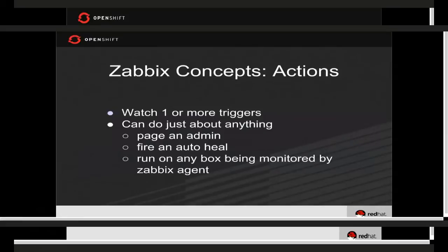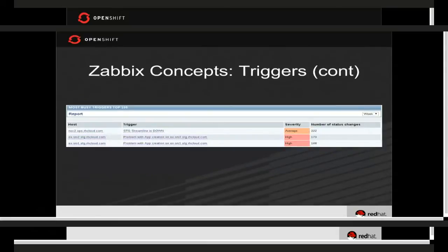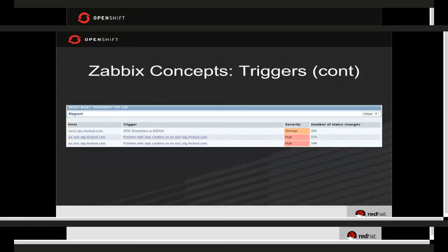Actions are the things that actually do something. Actions can watch one or more triggers, and whenever a trigger fires, they can say: triggers with this severity, in this environment, on this host group — when that fires, go run this script or do this. They can page an admin, they can fire an auto-heal, they can run on any box being monitored by the Zabbix agent. So when a trigger fires for a specific host — for example, that host had a problem with app creation — we can fire an action on that host to try to auto-heal.